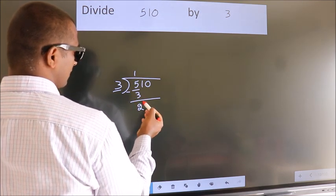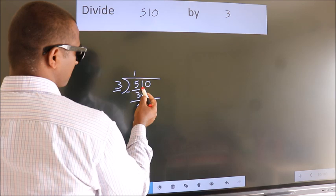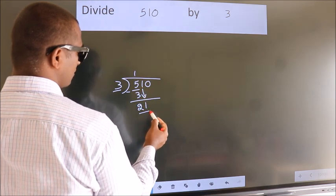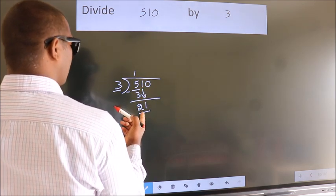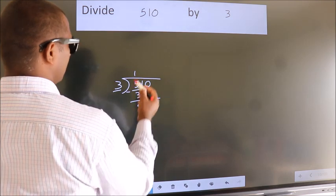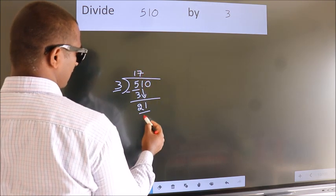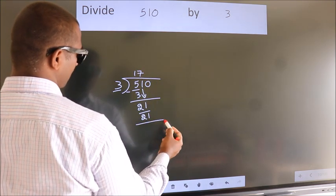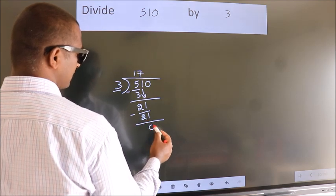After this, bring down the beside number. So 1 down. So 21. When do we get 21? In 3 table. 3 sevens 21. Now we subtract. We get 0.